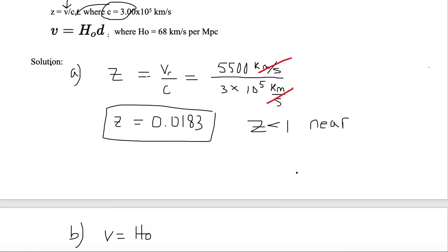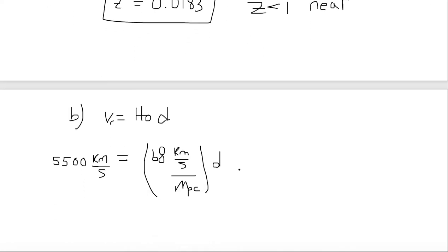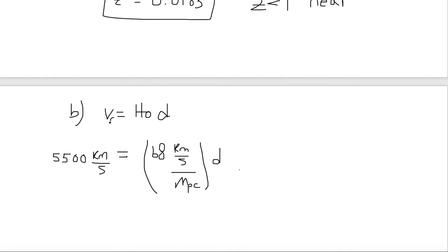Now let's find b. We want to find the distance to the galaxy using the Hubble-Lemaître law, where v, the radial velocity or recessional velocity, is equal to H₀ times d. The radial velocity is 5,500 kilometers per second. Our Hubble constant that we're using in this example is 68 kilometers per second per megaparsec times d. Now we want to eliminate things on the right-hand side, so we only end up with d.